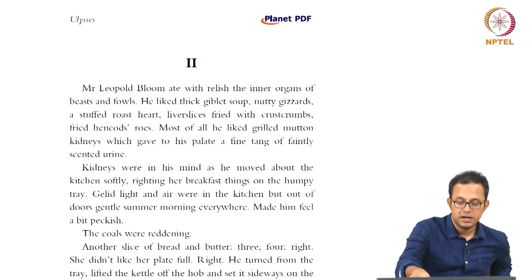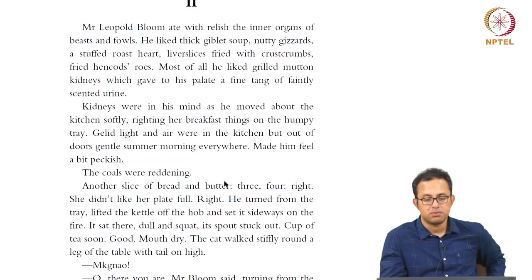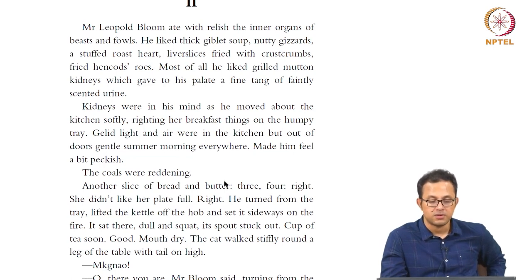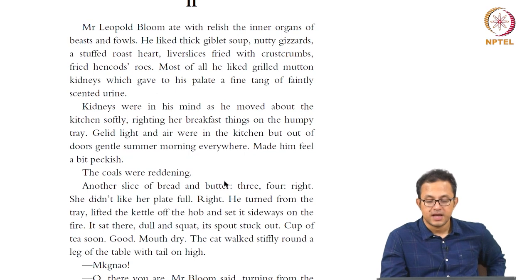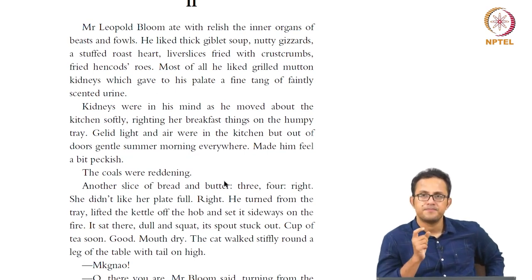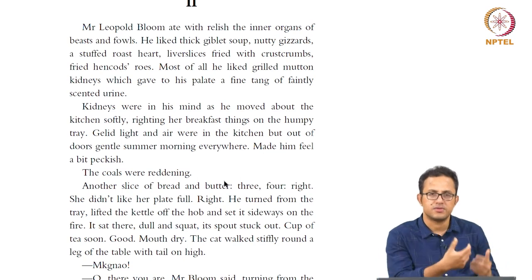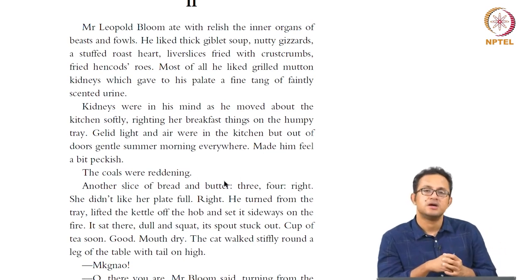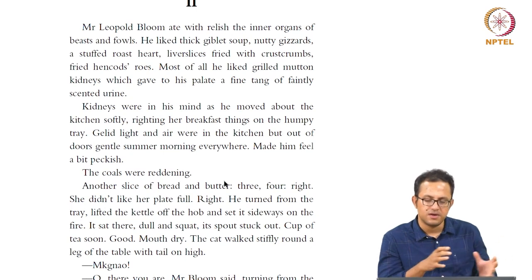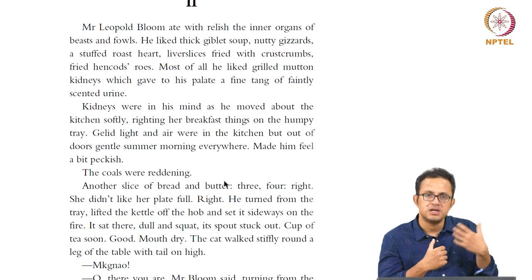The coals were reddening. Another slice of bread and butter. She did not like a plate. He turned from the tray, lifted the kettle off the hob and set it sideways on the fire. It sat there, dull and squat, its spout stuck up. Cup of tea soon. Mouth dry. The cat walked stiffly around a leg of the table with tail on high. Look at the almost automatic association the thought processes achieve — a degree of automatism about movements, almost machinic in quality. This is very much part of the stream of consciousness technique that the modernists use to great effect.